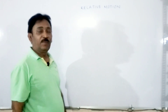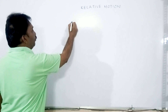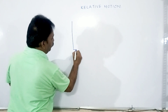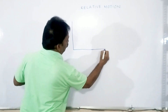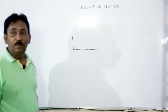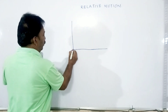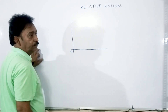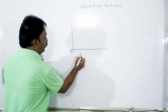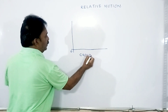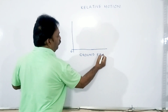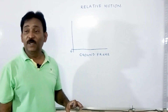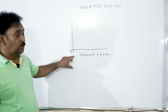To understand this in the right way, first locate a coordinate axis system. We have, as usual, the x-axis and the y-axis. Say it is the origin. And say it is the ground frame — it is the ground frame.